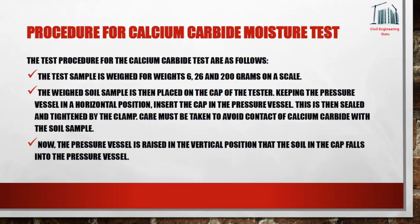The test procedure for the calcium carbide test is as follows: the test sample is weighed — either 6, 26, or 200 grams — on a scale. The weighed soil sample is then placed on the cap of the tester, keeping the pressure vessel in a horizontal position. The cap is inserted into the pressure vessel, sealed, and tightened by the clamp. Care must be taken to avoid contact of calcium carbide with the soil sample.